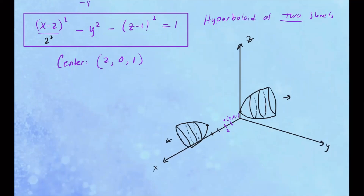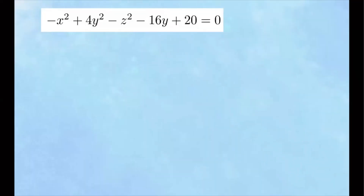To be specific, we can label the vertices: one vertex is at (4, 0, 1) and the other vertex is at (0, 0, 1). That makes our graph a little more clear. This is what we call a hyperboloid of two sheets. Now let's go ahead and try another equation — again, we're going to put it in standard form, identify the kind of surface it is, and make a rough sketch.